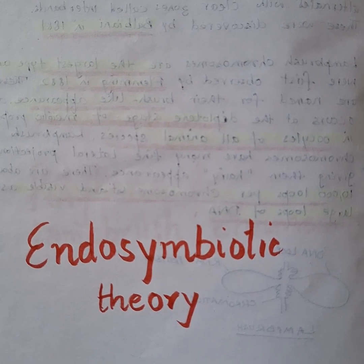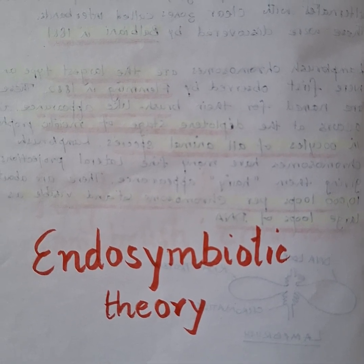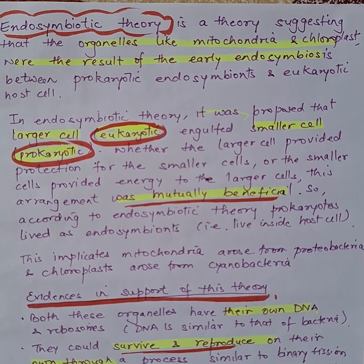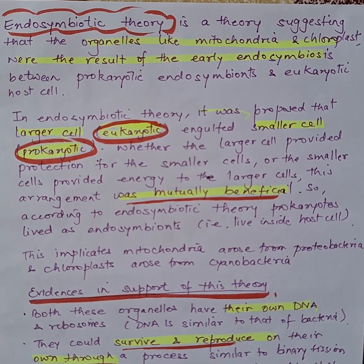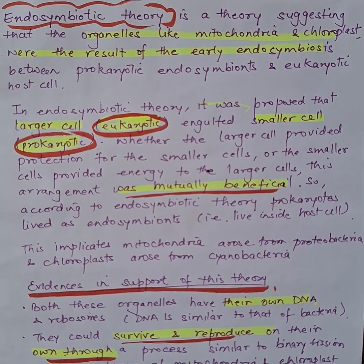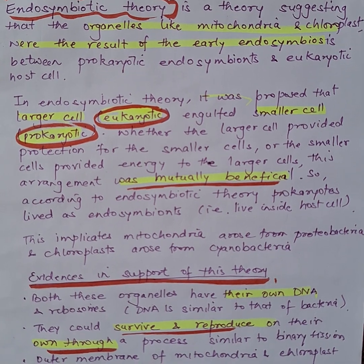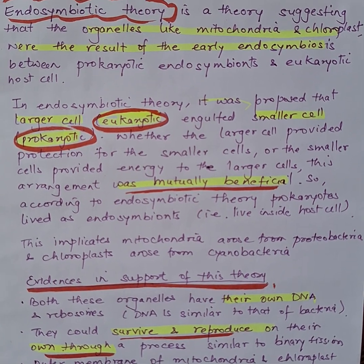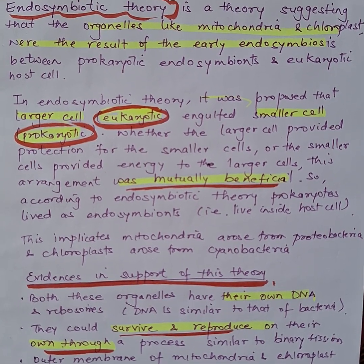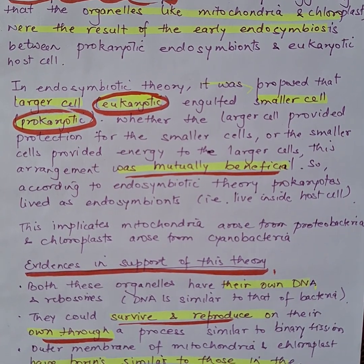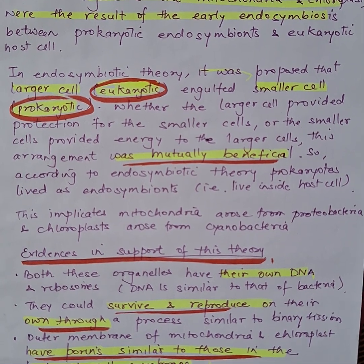We are going to discuss about endosymbiotic theory. This theory suggests that organelles like mitochondria and chloroplasts were the result of early endosymbiosis between a prokaryotic endosymbiont and a eukaryotic host cell.